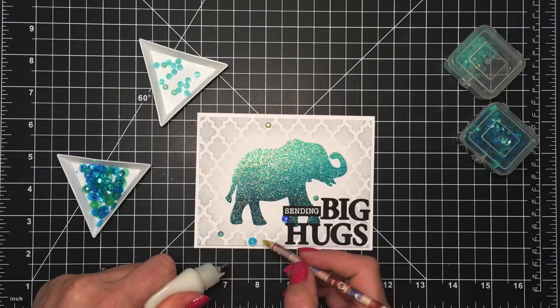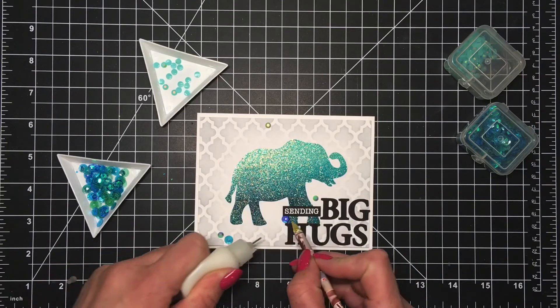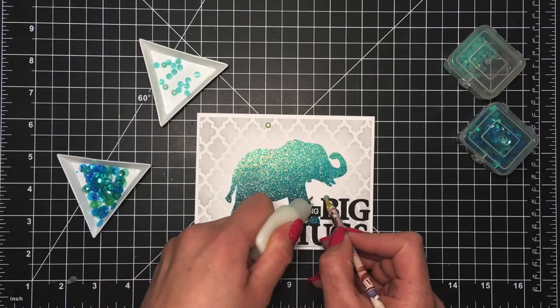And then some Distress Collage Medium in the matte finish and my wax pencil. I will use those to adhere down some aqua blue iridescent gemstones and sequins.